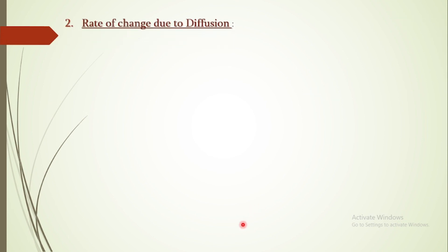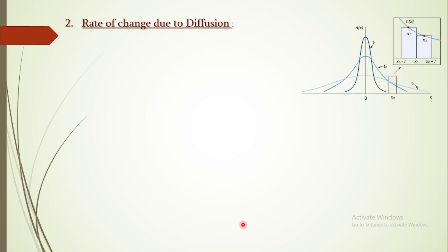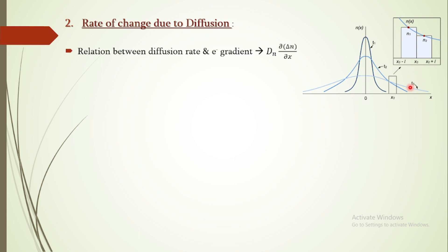Moving to the second factor — the rate of change due to diffusion. The concentration gradient is initially very high; because of this gradient the charge carriers diffuse and the peak gradually flattens. From the Einstein relation, we get the relation between diffusion rate and excess electron gradient, given by D_n · ∂(delta n)/∂x. Note that rate of change is with respect to time, while concentration gradient is with respect to position x.